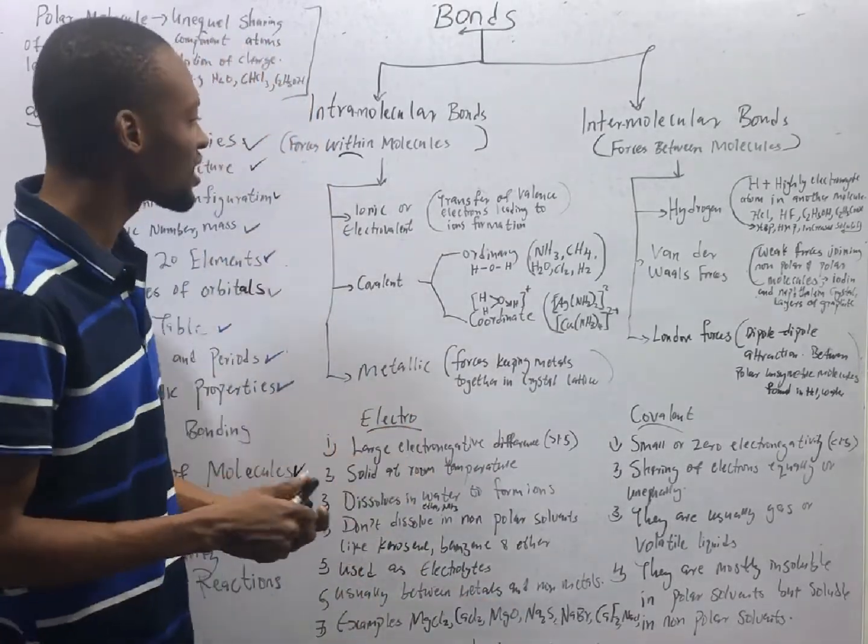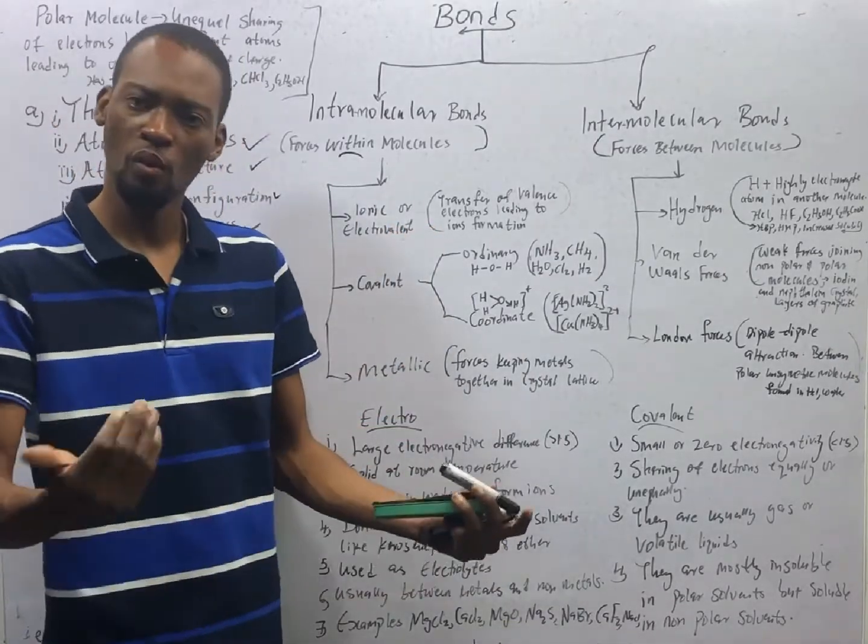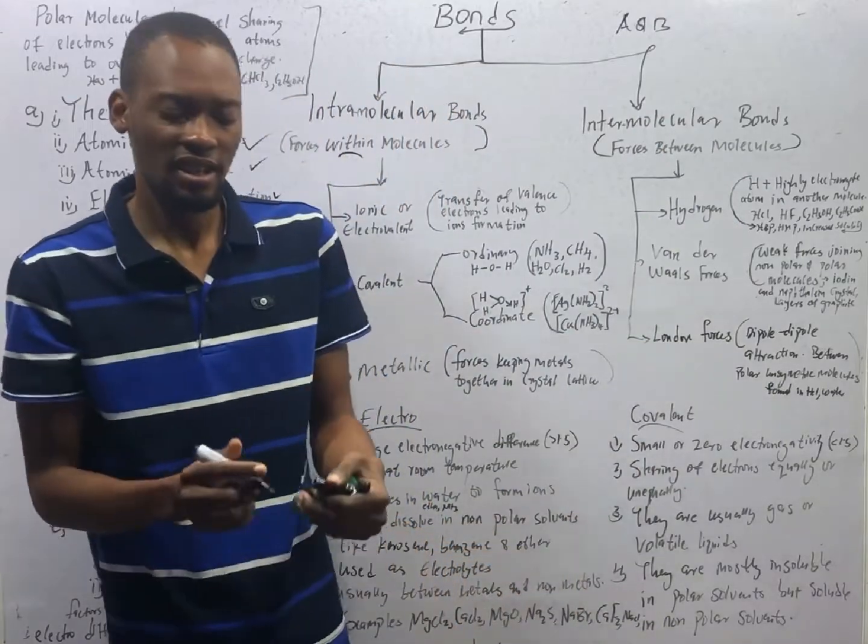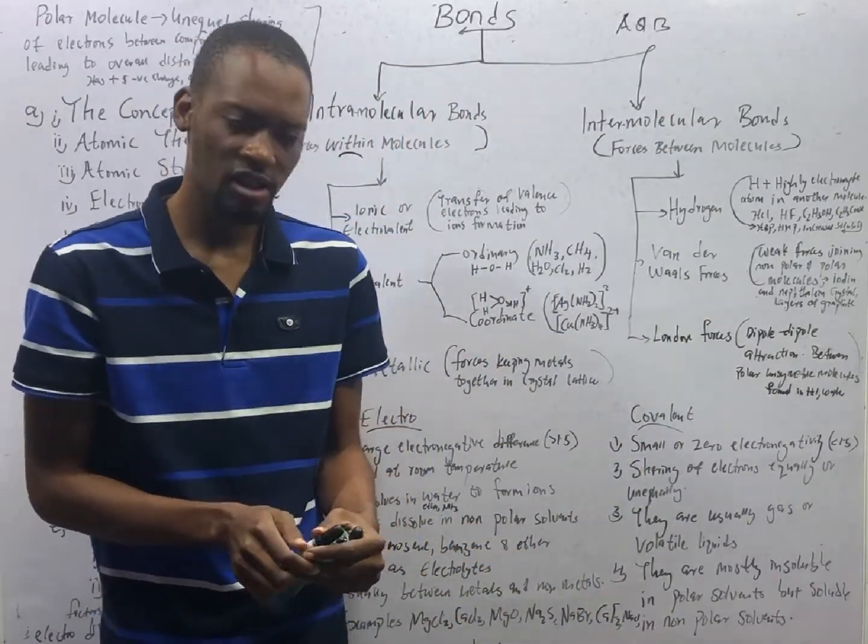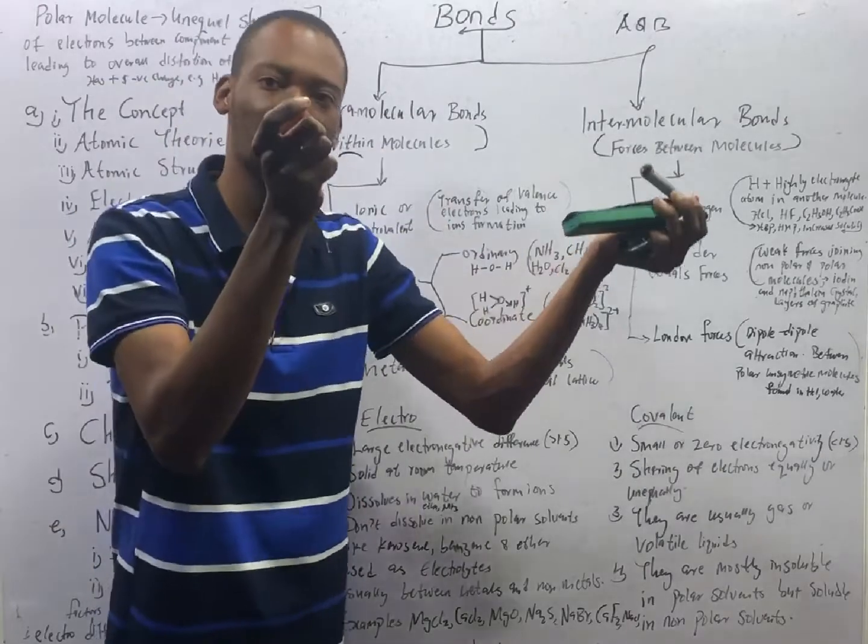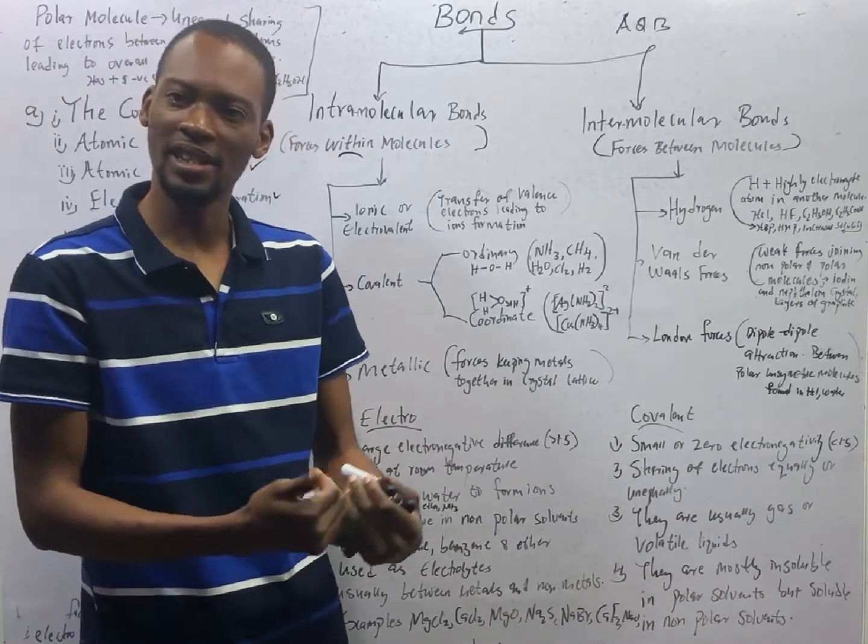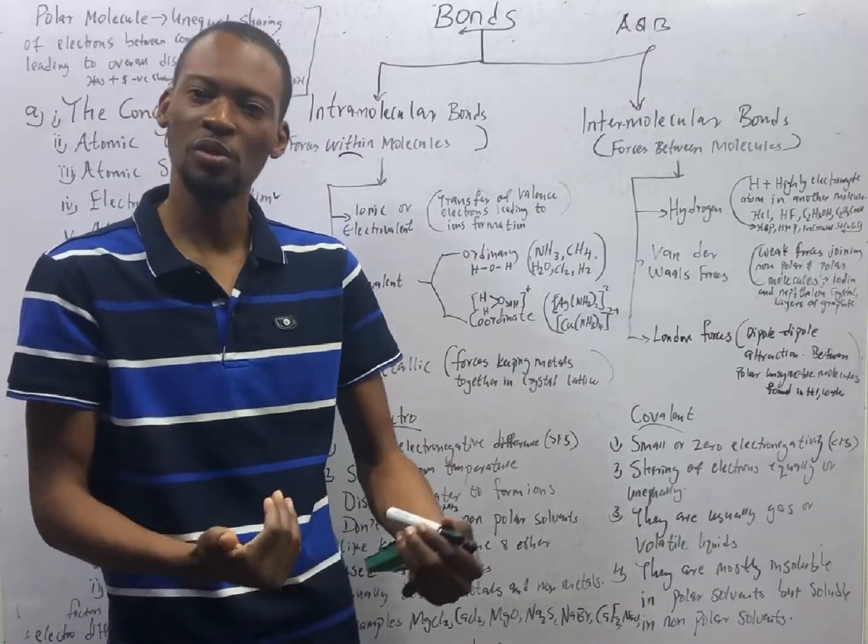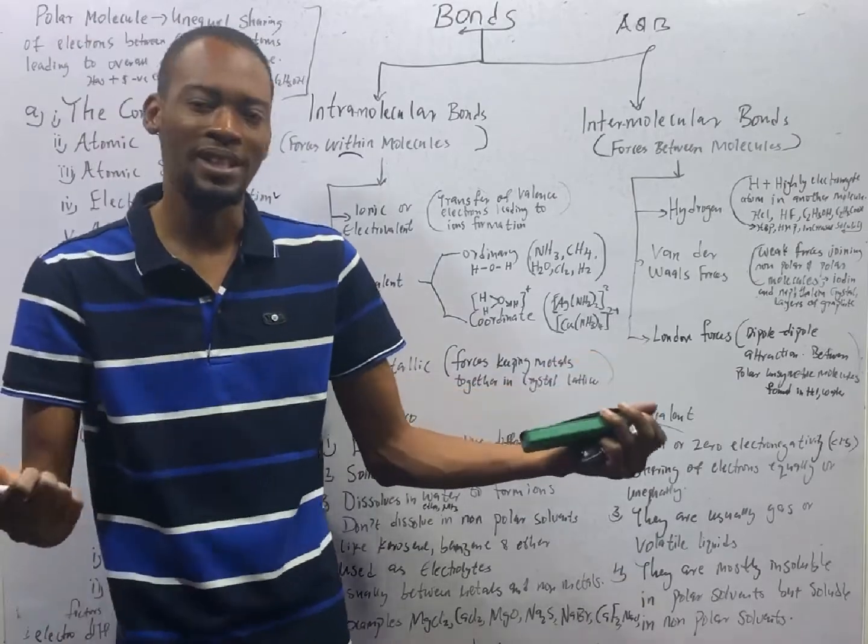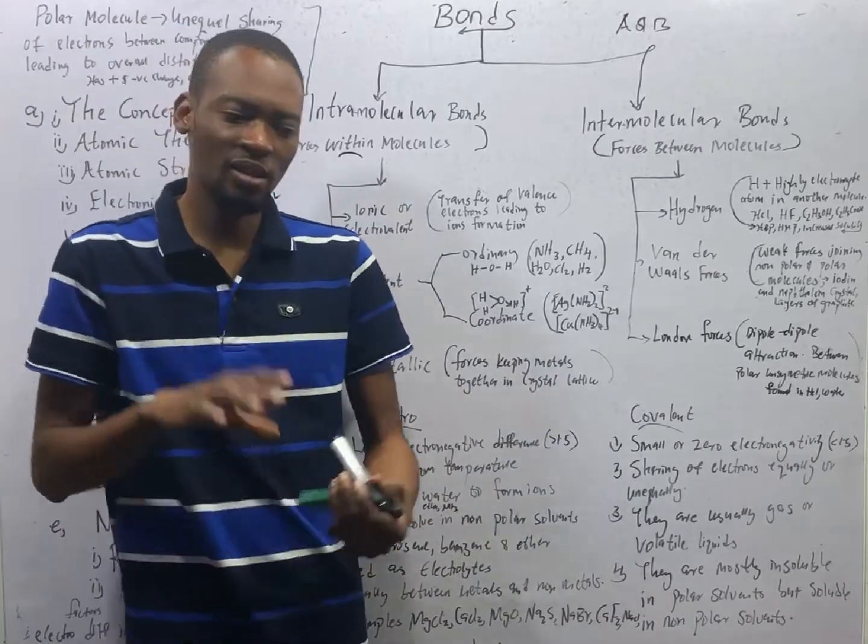Now, what is an electrovalent bond or ionic bond? Electrovalent bond is a bond whereby we have element A and we have element B. Element A has three electrons in the outermost shell. Element B needs three electrons in the outermost shell. So if electron A donates the electron to electron B, electron A becomes positively charged, a positive ion.